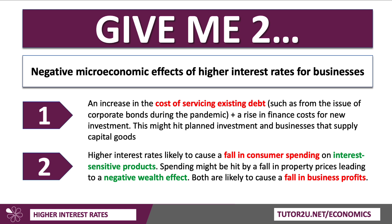There's also a link between households and businesses. If interest rates go up, that's going to cause a fall in consumer spending on interest-sensitive products — new kitchens, bathrooms, new cars. Spending might also be hit by a fall in property prices. Both are likely to cause a fall in business profits. Although in evaluation, some industries, some businesses, some sectors are more insulated than others from higher interest rates, and some companies are better prepared to cope. So again, there's going to be an asymmetry in effect.